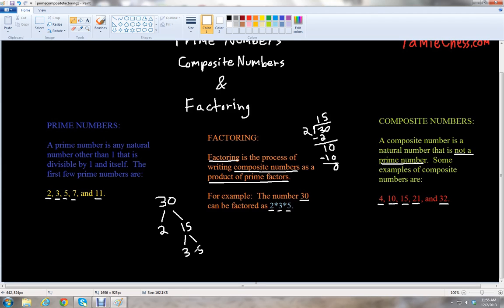And we also know with 15 from times tables that 3 times 5 is 15. So we see the prime numbers, the first few here that we had: the 2, the 3, and the 5. They appear right here in this number 30. All the prime numbers that end at each branch of the tree, we multiply those together. That's how we get 2 times 3 times 5 for 30.